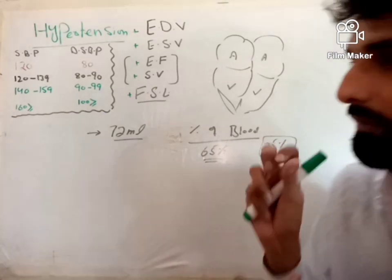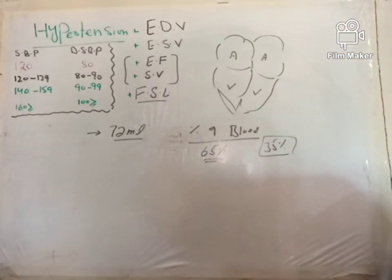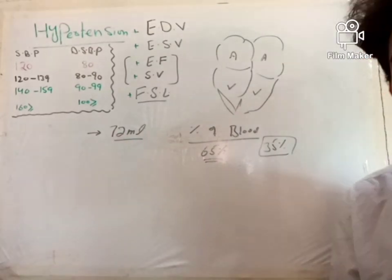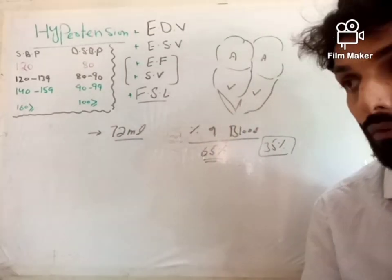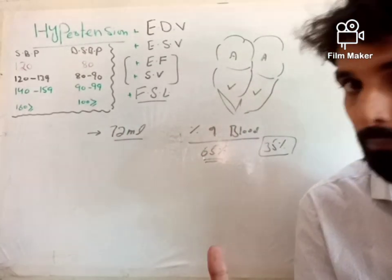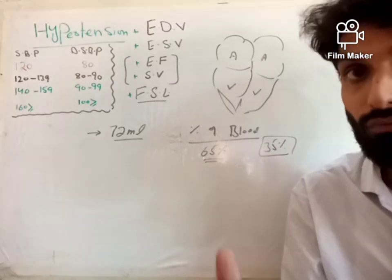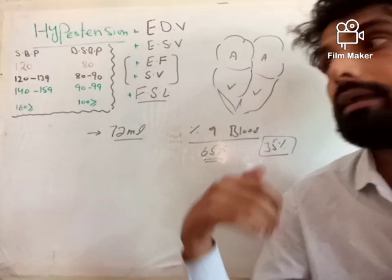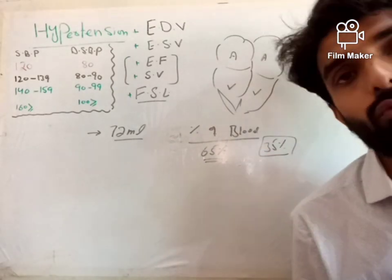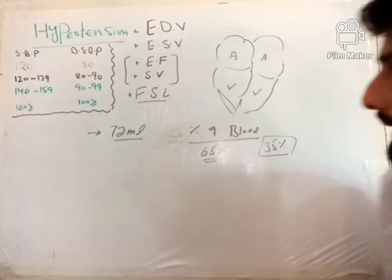So ejection fraction is the percentage of blood that has been ejected, while stroke volume is the average volume of blood ejected into the blood vessel per contraction.